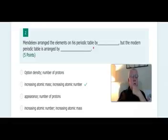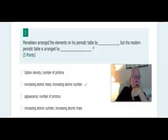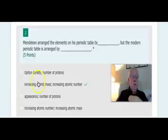Here's an oldie but a goodie. Mendeleev arranged the elements on his periodic table by what? By mass, okay? And yet the modern periodic table is arranged by atomic number. So let's go through our list. Option density number - no. Increasing atomic mass, increasing atomic number - correct. Mendeleev was increasing atomic mass, and then the modern chart, increasing atomic number.